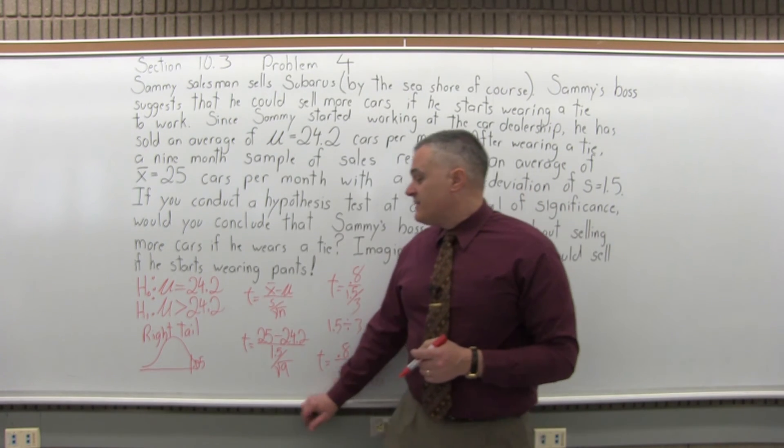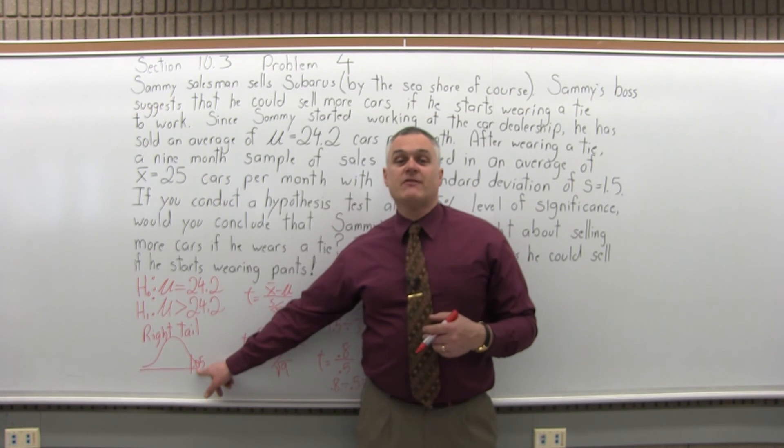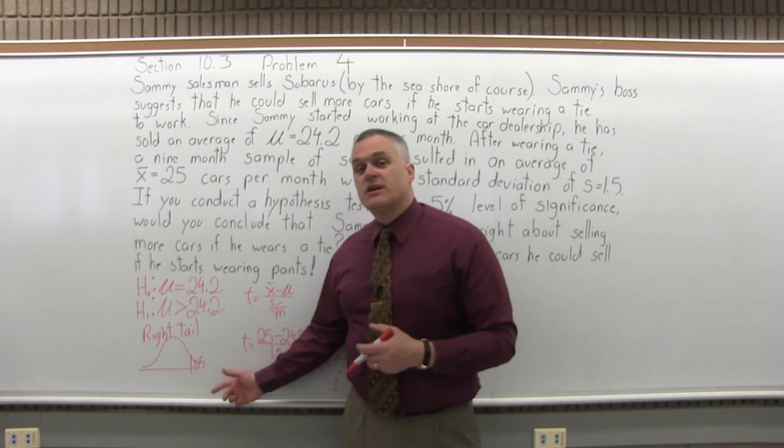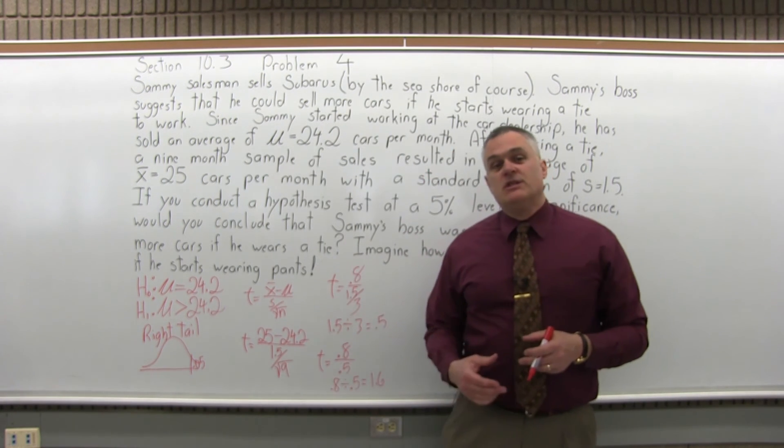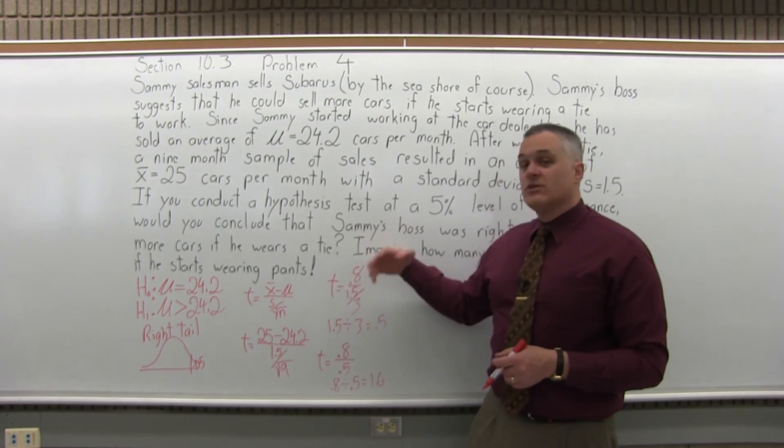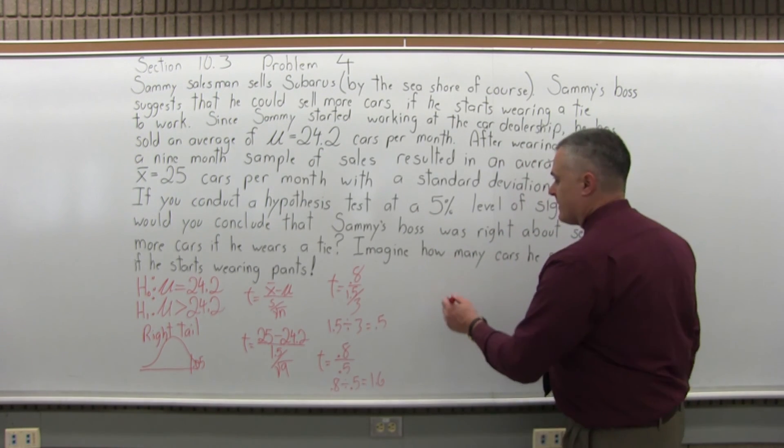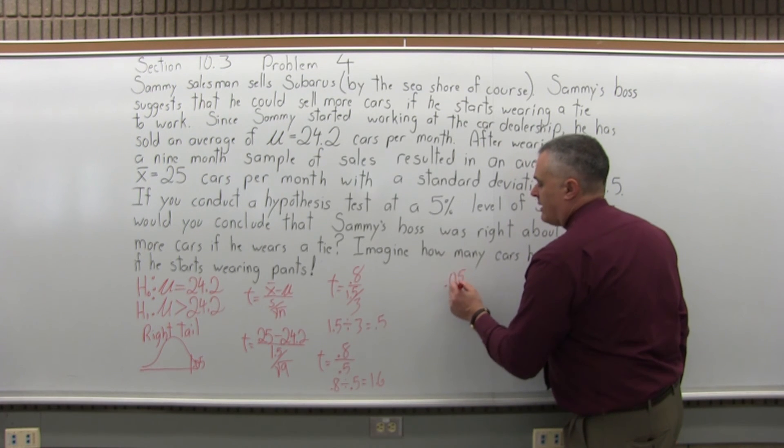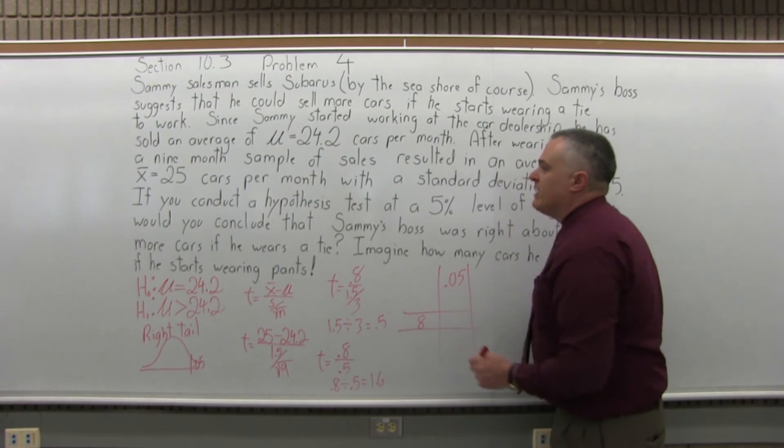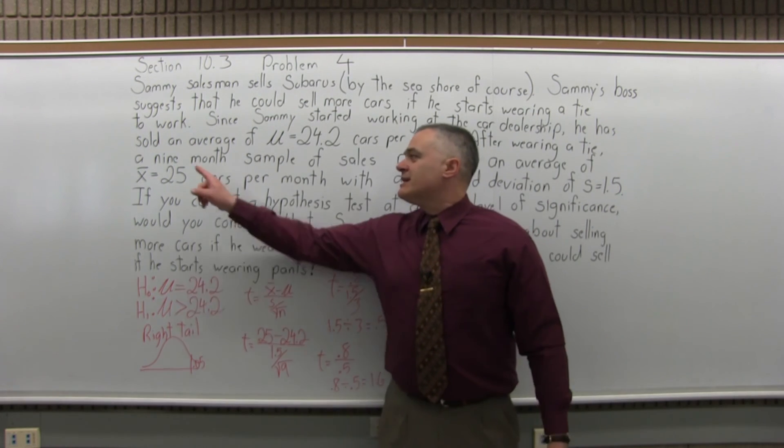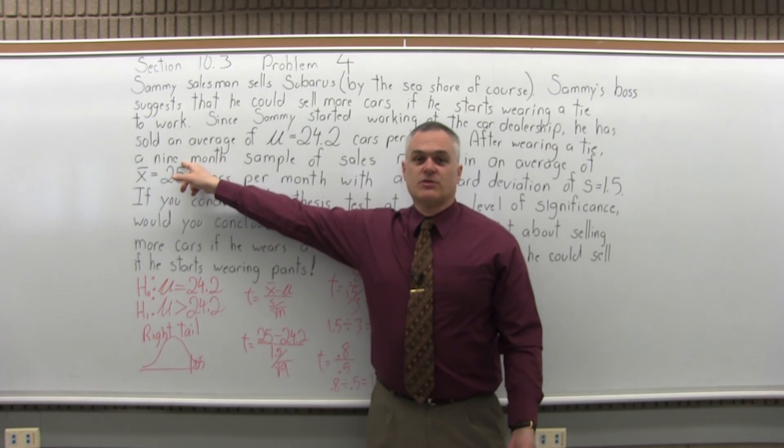Now what we want to do is see if that 1.6 is going to push us out into the critical region. Step 5 is determine the critical value for T where you'll start going out into that critical region. So what you want to do is go to the student T chart that's attached to the end of the homework. You want to go to the 0.05 column for 5%. And you go down that column and the row that you want to find is the row with 8. You want the row that's 1 less than the size of your sample. And what they call that is degrees of freedom. Your degrees of freedom is 8, 1 less than the size of the sample.